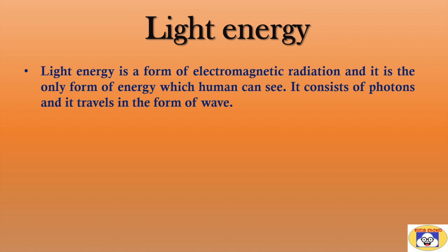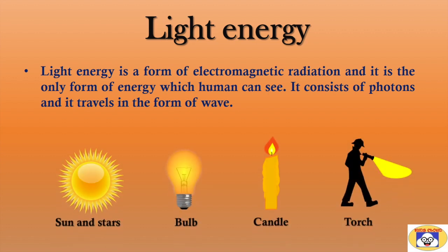The visible form of energy is light energy. Light energy is a form of electromagnetic radiation and it is the only form of energy which humans can see. It consists of photons and it travels in the form of waves. Plenty of examples of light energy are there in your surrounding. Some of these are shown here. The sun and stars are natural examples. In addition to this, bulb, candle and torch are other examples. You can find many more if you watch carefully.